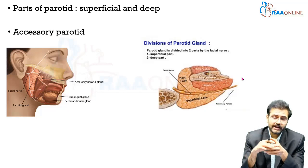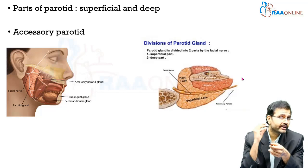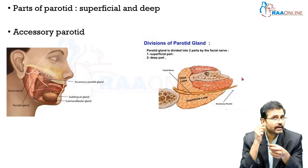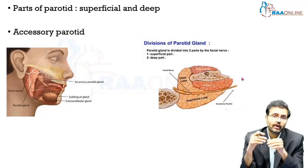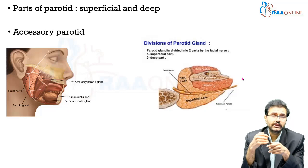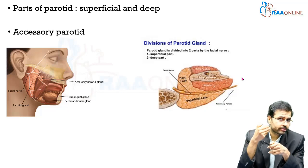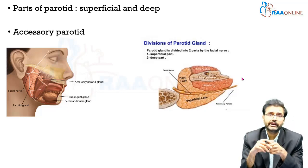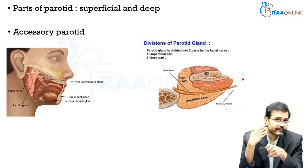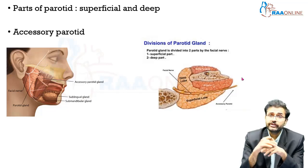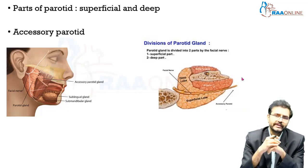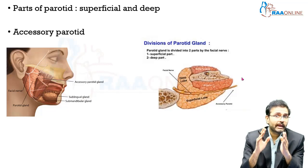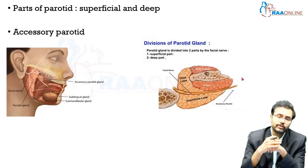The superficial part is closely related to the ramus of the mandible, whereas the deep portion is located deep to the mandible, more closely related to the posterior aspect of the mandible, and very closely related to the parapharyngeal space. This is very important because certain lesions involving the deep lobe may not be very apparent from the external point of view.